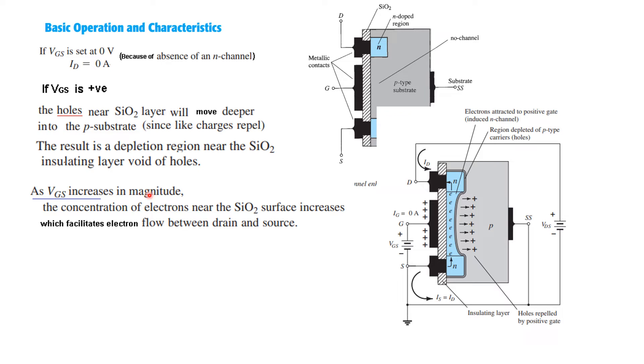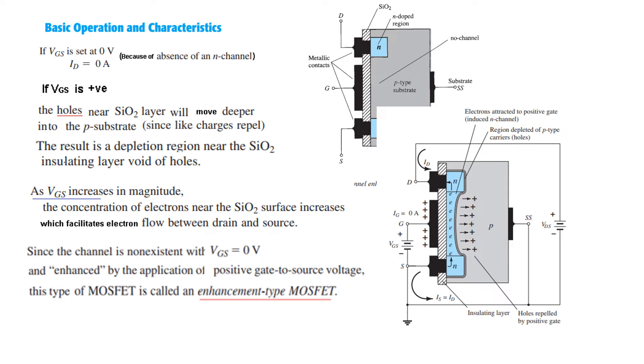So as VGS increases in magnitude, as we increase this voltage, there will be more and more holes moving away from here and there will be more flow of current. But after some time or after some voltage, this will stop. That is known as saturation. Since the channel is non-existent with VGS=0 and enhanced by application of a positive gate voltage, this MOSFET is called enhancement type MOSFET. So since the channel is created or enhanced after application of positive voltage, that is why it is called enhancement type MOSFET.